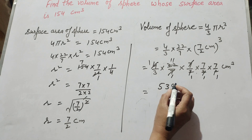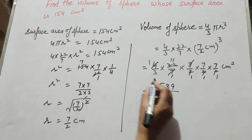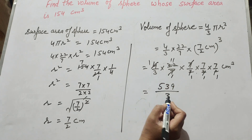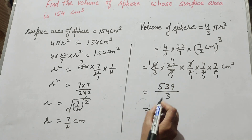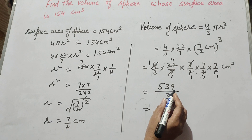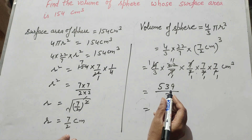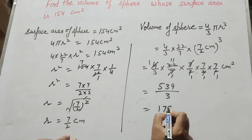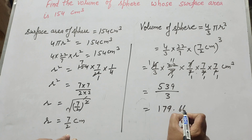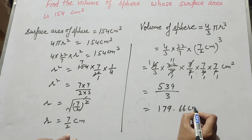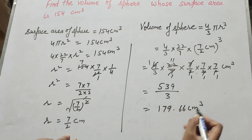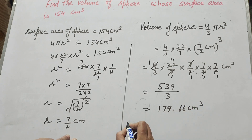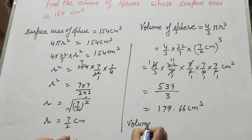539 over 3 — dividing 539 by 3 we get the answer equal to 179.66 centimeter cube. So the volume of the sphere is equal to 179.66 centimeter cube.